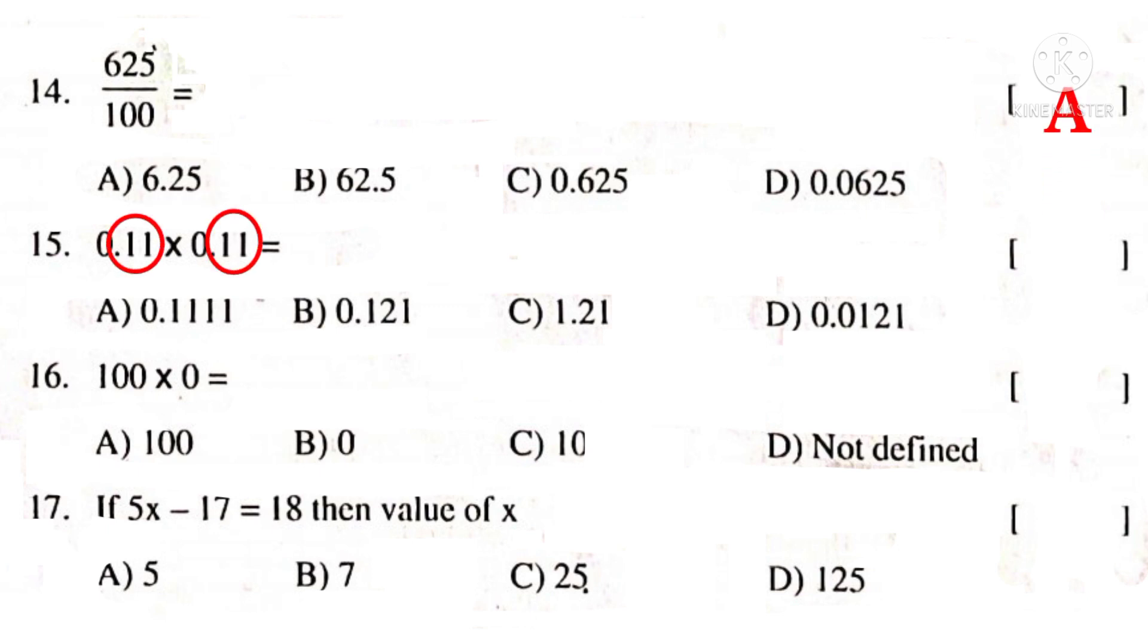0.11 into 0.11. 11 into 11 is 121. Observe that two decimal places, two decimal places, so total four decimal places. Put a decimal point counting from right side to left side after four digits. That is 0.0121. So, the correct choice is D.